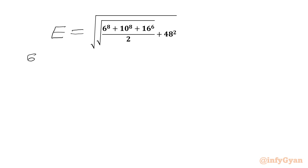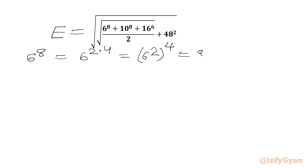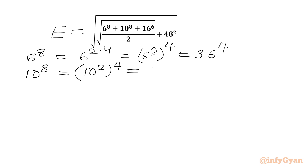Now I will simplify all the exponents separately. 6 power 8 can be written as 6 power 2 times 4, which equals 6 squared whole power 4, using exponent laws, equal to 36 power 4. So in place of 6 power 8 we will write 36 power 4. Similarly, 10 power 8 equals 10 squared whole power 4, and 10 squared is 100, so in place of 10 power 8 we can write 100 power 4.